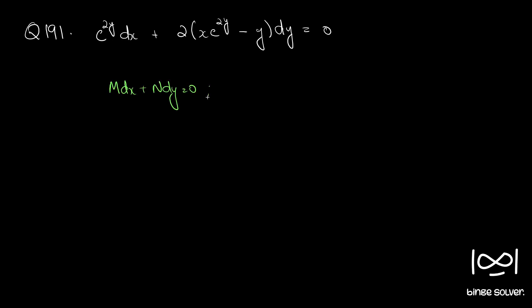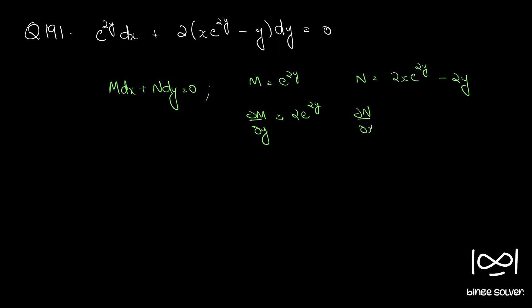We will first check whether the given equation is exact. Our M here is e raised to 2y, and N here is 2x e raised to 2y minus 2y. So ∂M/∂y equals 2 e raised to 2y, and ∂N/∂x is equal to 2 e raised to 2y.